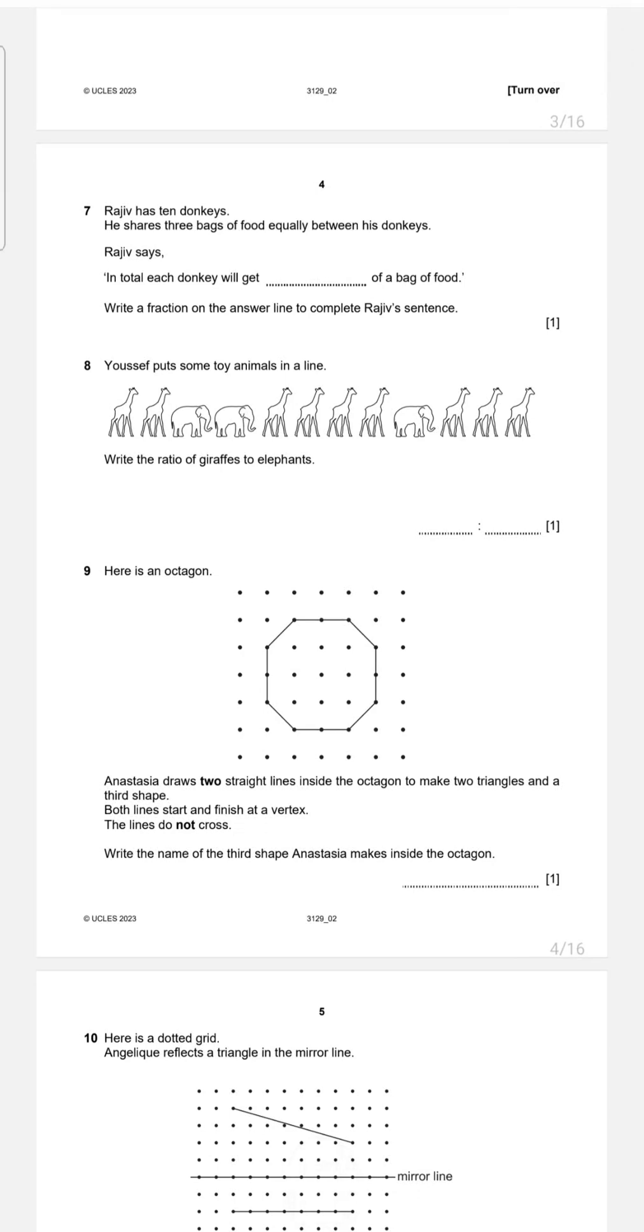Let's continue with seven. Rajiv has 10 donkeys. She shares three bags of food equally between these donkeys. Rajiv says, in total, each donkey will get blank of bag of food. Write a fraction on the answer line to complete Rajiv's sentence. So dear, what is the total number of donkeys? How many donkeys do we have? We have 10 donkeys. And she shares three bags between 10 donkeys. So we need to divide three bags among the 10 donkeys. So let me write, three divided by 10. As you know, three is the numerator and 10 is the denominator. How we can write as a fraction? Three over 10. That's all.